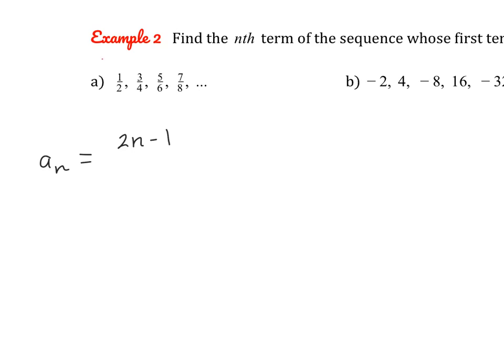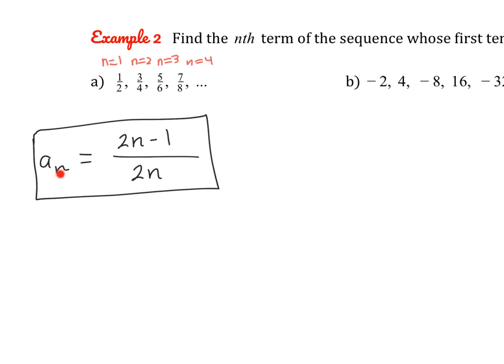So when n equals 1, 2, 3, 4, each numerator is 1 less than twice the place in line — for example, 1 less than 4, 1 less than 6, and so on. For the denominator, we're increasing by 2 each time. Comparing n with the denominator: n=1 gives 2, n=2 gives 4, n=3 gives 6 — the denominator is simply 2n. This formula tells us the nth term, so we can plug in any value, like 75, to find that specific term.